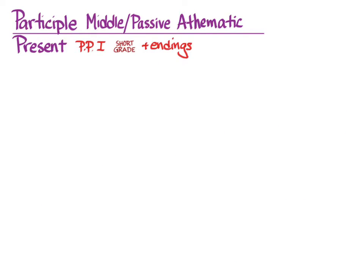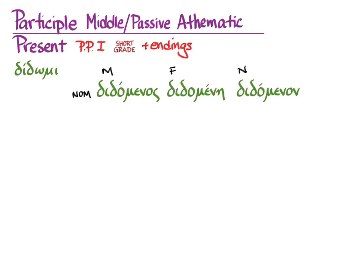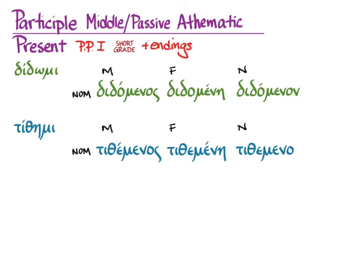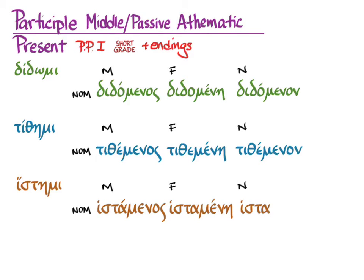Let's move on to the middle/passive system and the present participles for athematic verbs, which will be the first principal part in the short grade plus the endings. So if we do that for didomi, we will get didomenos, didomene, didomenon. This time we don't need the genitive because middle/passive participles decline like kalos, kale, kalon—that is to say, just like a two-ending first and second declension adjective. If we go on to tithemi, we will get tithemenos, tithemene, tithemenon. And then for histemi, we will get histamenos, histamene, histamenon.